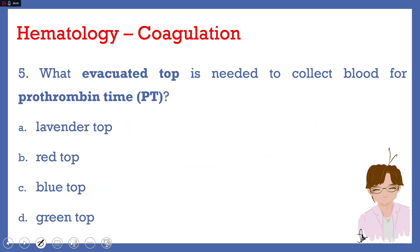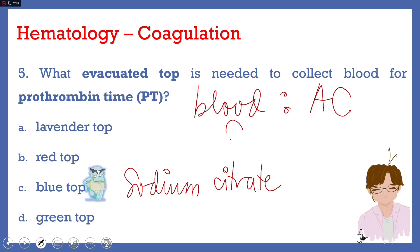The final number for this video is number five. What evacuated top is needed to collect blood for prothrombin time or PT? A. Lavender, B. Red, C. Blue, or D. Green top. Answer here is letter C. Blue top contains sodium citrate and it's the preferred anticoagulant for coagulation testing. A very important ratio to remember is blood to anticoagulant of 9 is to 1.